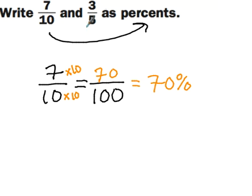Now let's do the next one here. Let's take 3 fifths. If I take 3 over 5, I need to set it equal to something over 100.